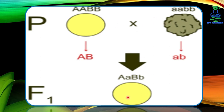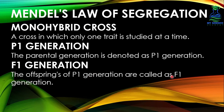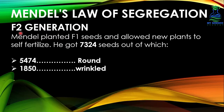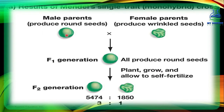When Mendel crossed round shape seed plants with wrinkled shape seed plants, all the resulting plants had round seed shape. This parental generation was denoted as P1 and these are the true breeding plants. The offspring of the P1 generation are called the F1, or first filial, generation. In the cross of both parent plants, the offspring obtained were all round seeded.